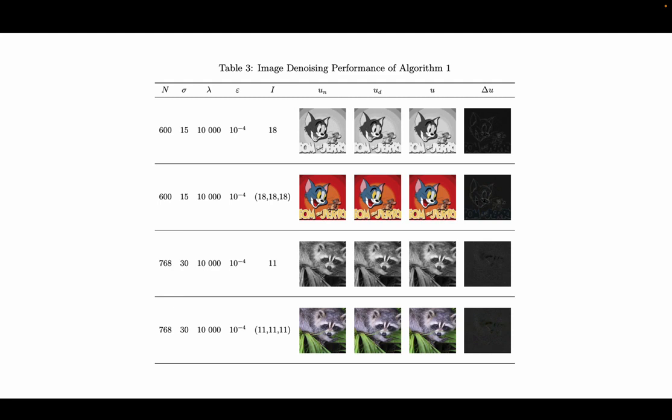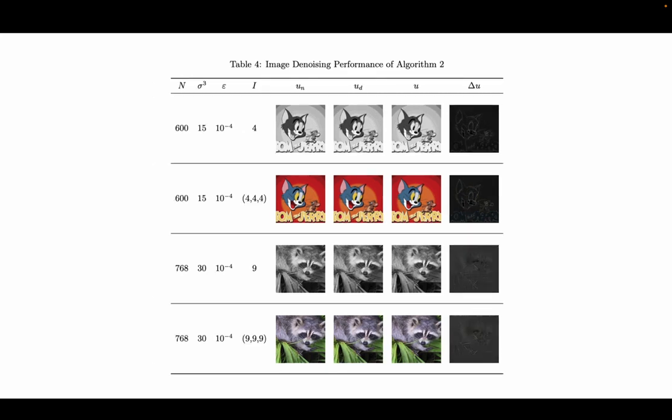And in table 3, we compare how many iterations it takes to denoise an image with algorithm 1. And in table 4, we compare the number of iterations needed to denoise an image with algorithm 2. As you can see here, algorithm 2 is much faster. It takes fewer iterations than algorithm 1.